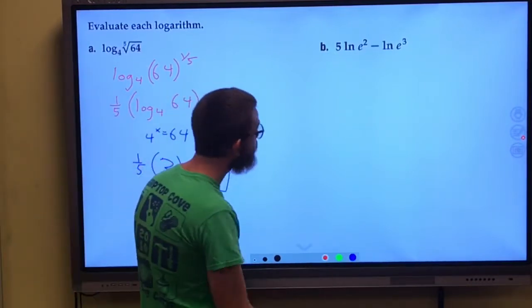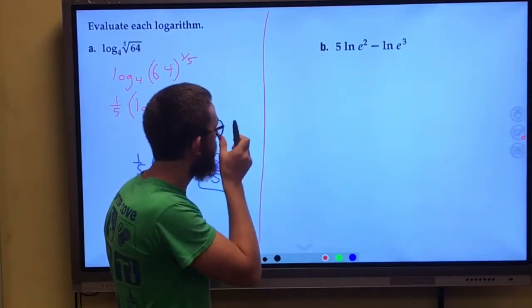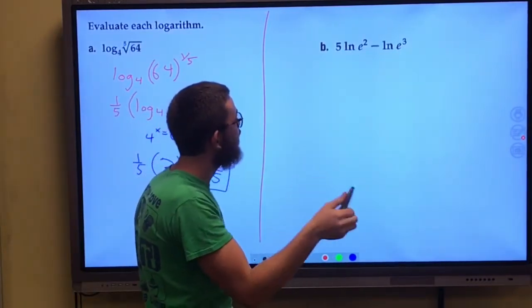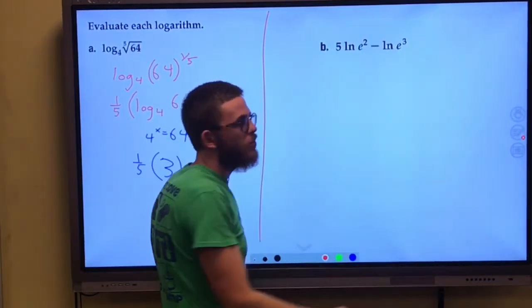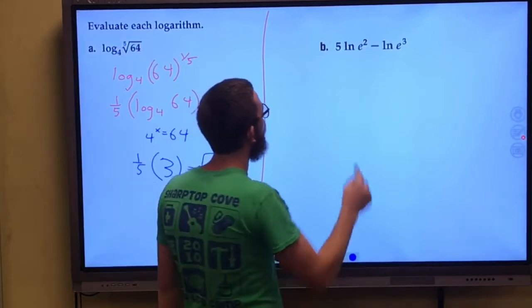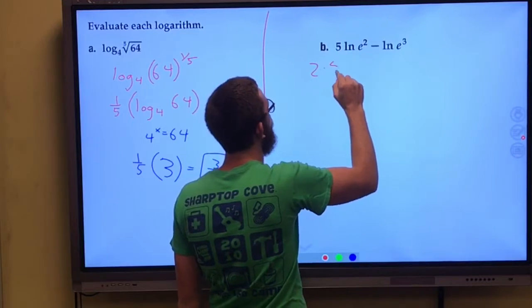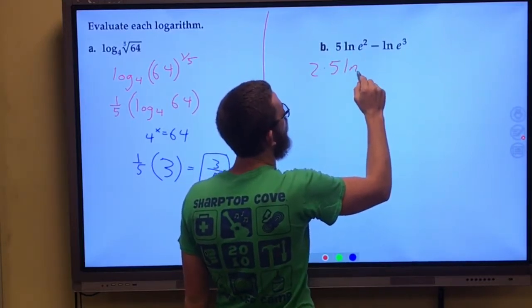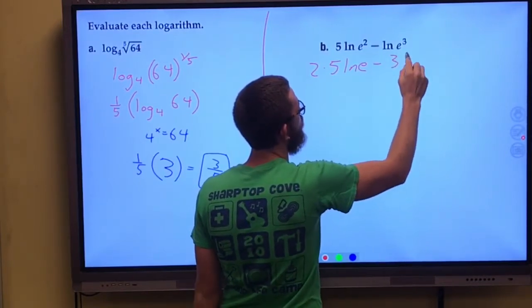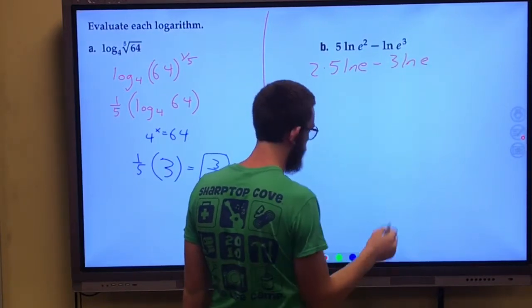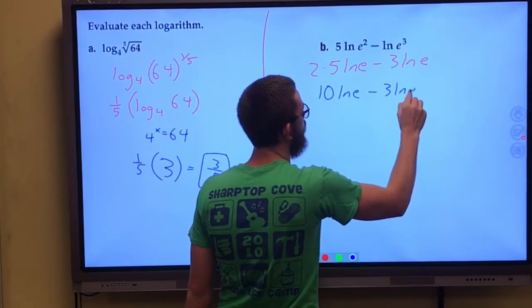All right, last one we're looking at here. We've got 5 natural log of e squared. Well, once again, I notice that we have something being squared. We've got an exponent inside of our log. So I'm going to bring that up to the front and multiply it. So this is now 2 times 5 natural log of e minus, again, I'm going to use my power rule, minus 3 natural log of e. So this is 10 natural log of e minus 3 natural log of e.